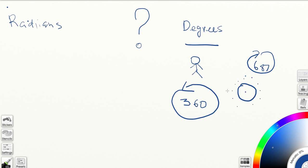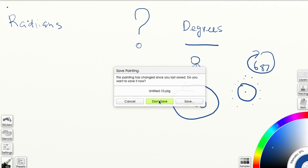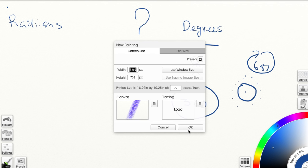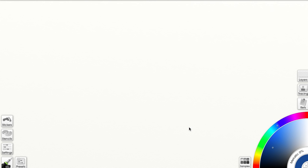But getting back to what actually radians are, let me just get a new screen up here. So a while ago, a smart guy noticed that if you take a circle, I'm just trying to trace another circle over here. There, that's a nicer circle.